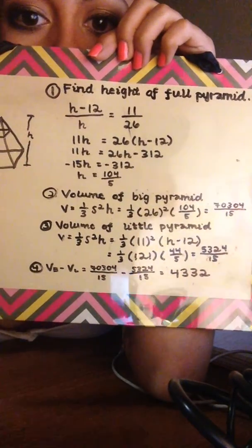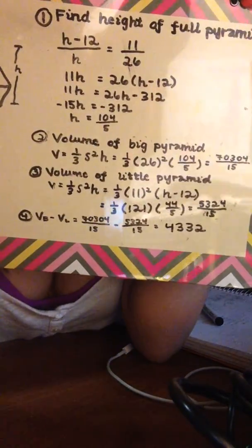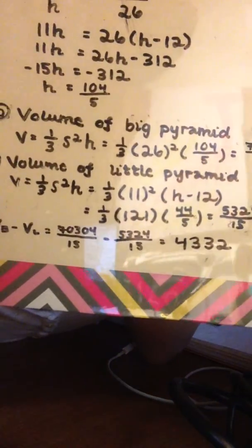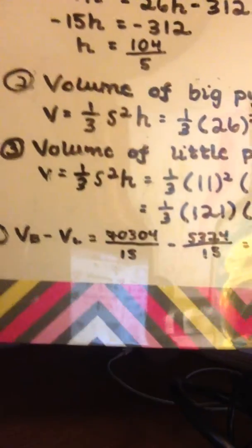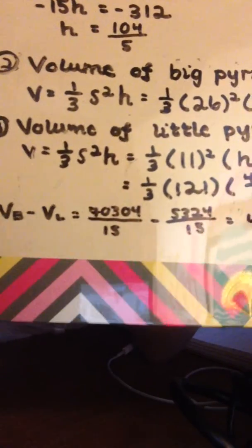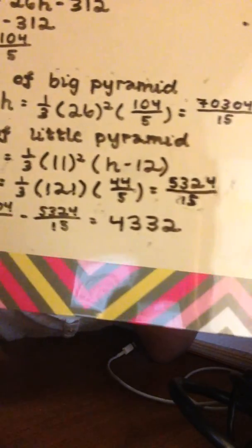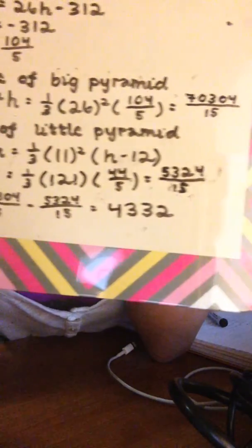So then the next step that you want to do using that information is find the volume of the big pyramid. The volume of the square pyramid is one-third side squared times h. So then you just do that, and you end up with 70,304 over 15.